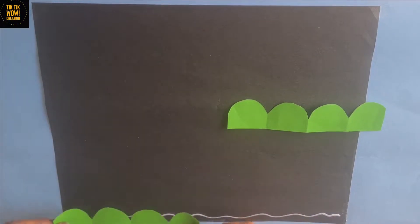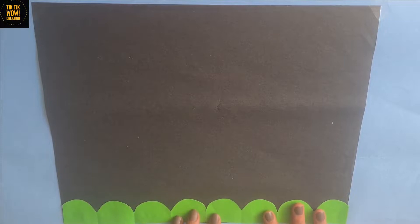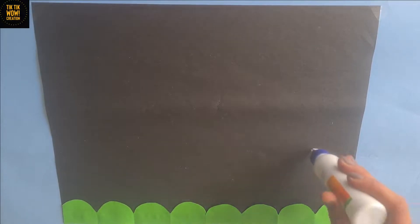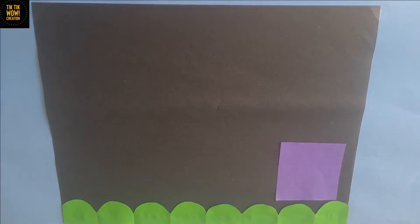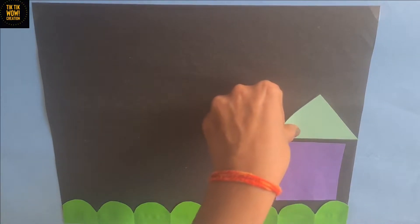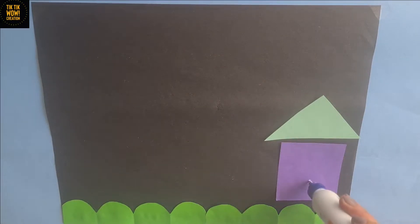First of all, take a sheet with any color. I have some semicircle grass here, paste it in bottom of the picture. Now take a square and a triangle to make a house.